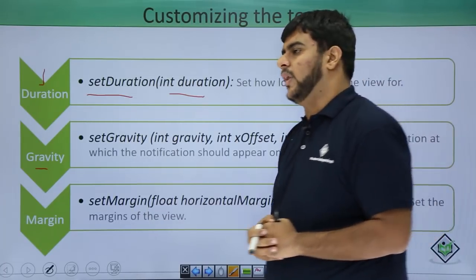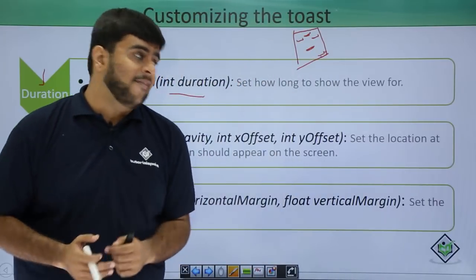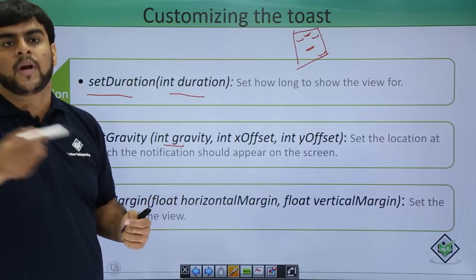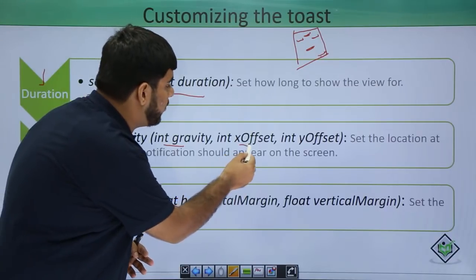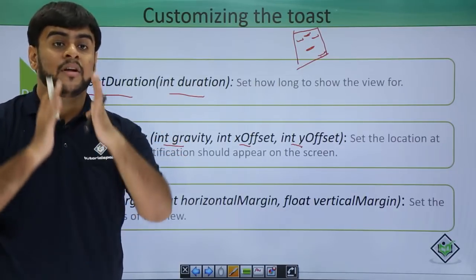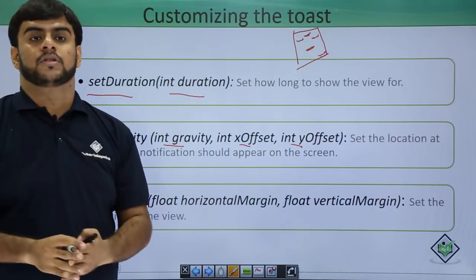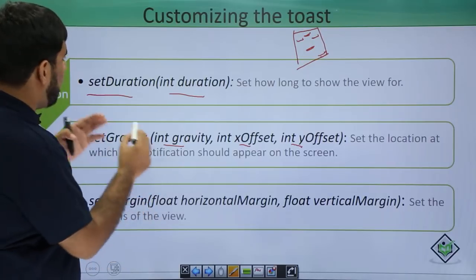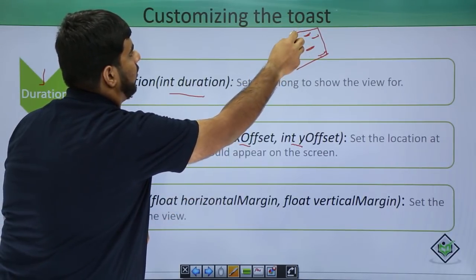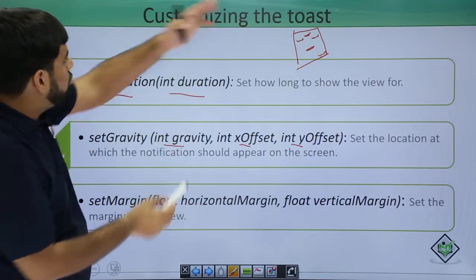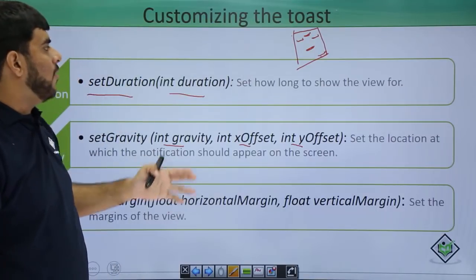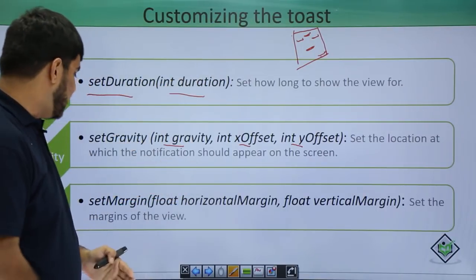These all things can be customized and help you modify your toast. The best part about gravity being that along with the gravity, like gravity top, gravity left, you can even pass some offsets. Offsets means that this would be an exact location where you would be showing the toast. This particular point of the screen is 0,0. So, you can pass your offset from here and show for what amount of time you want to show the toast.